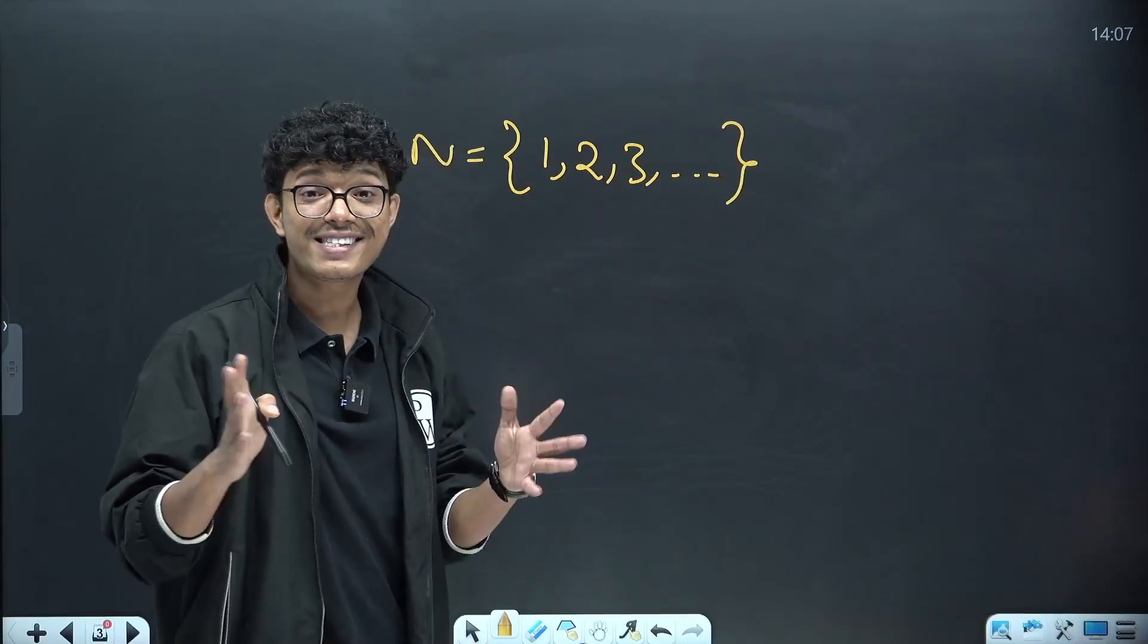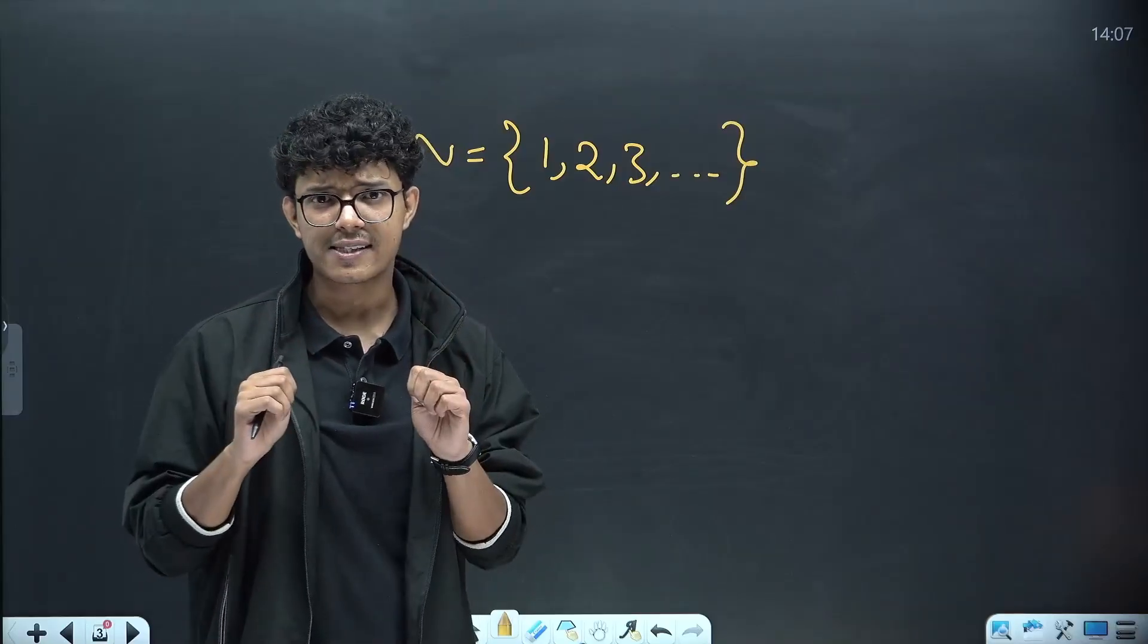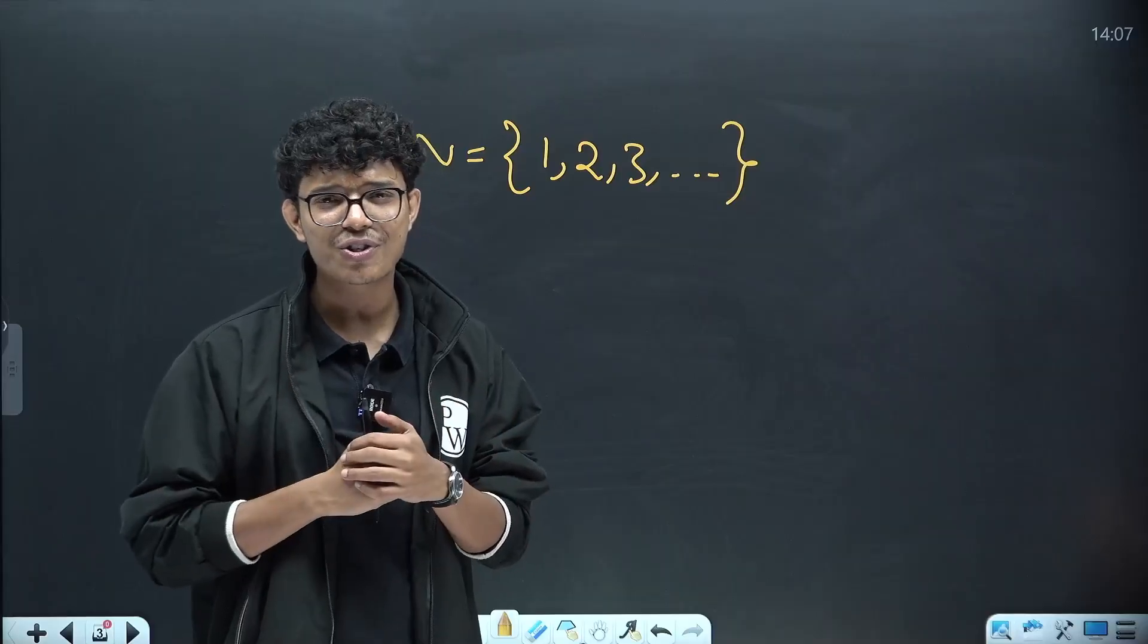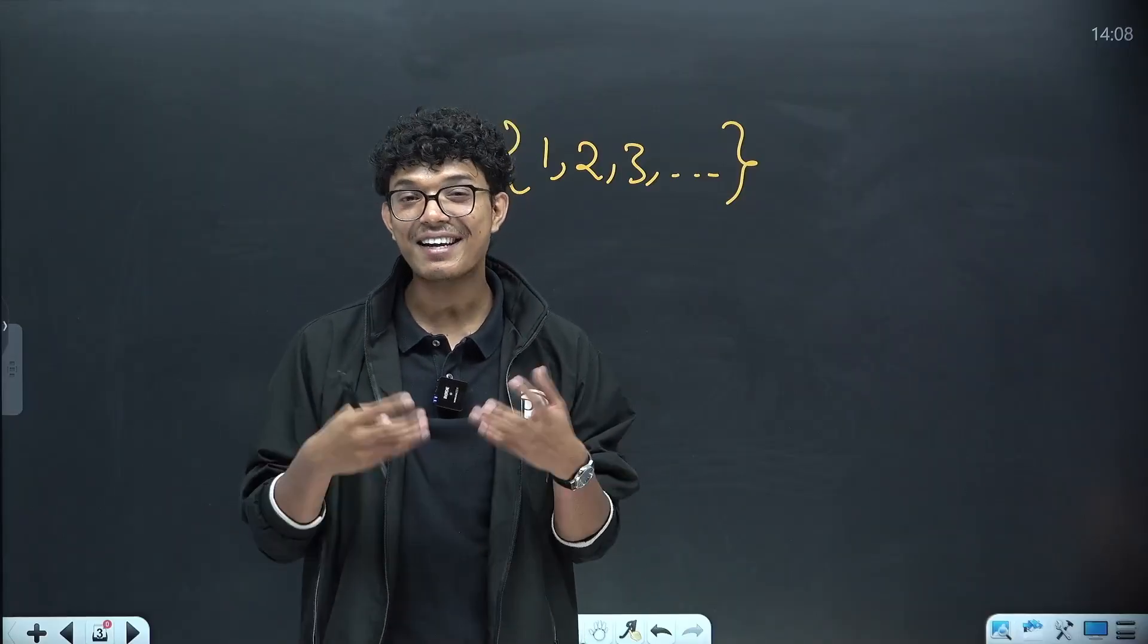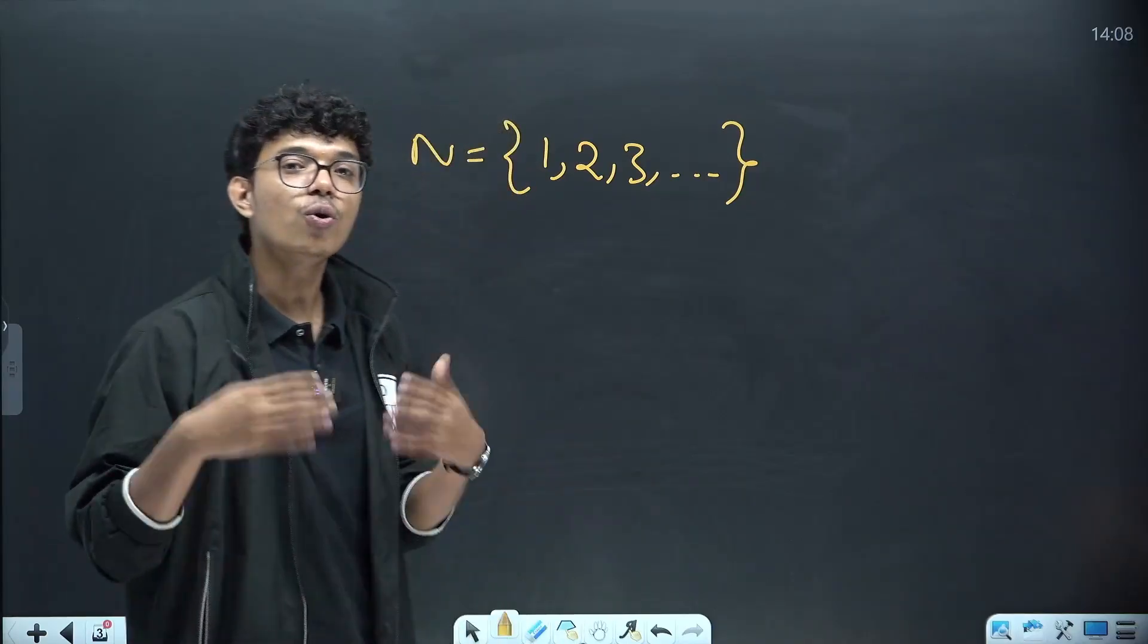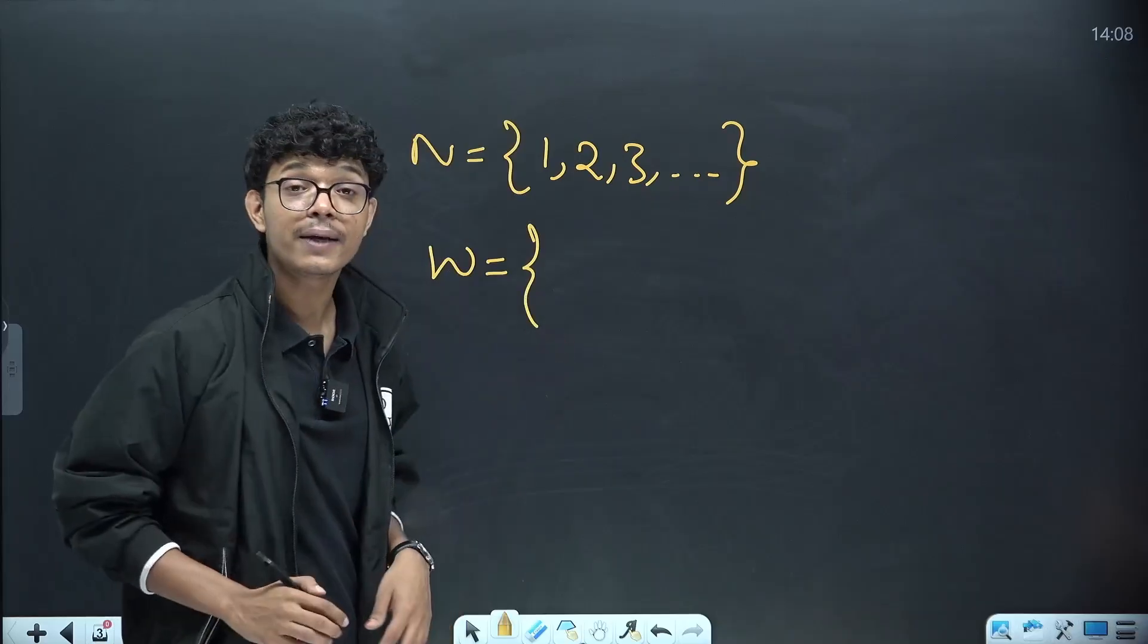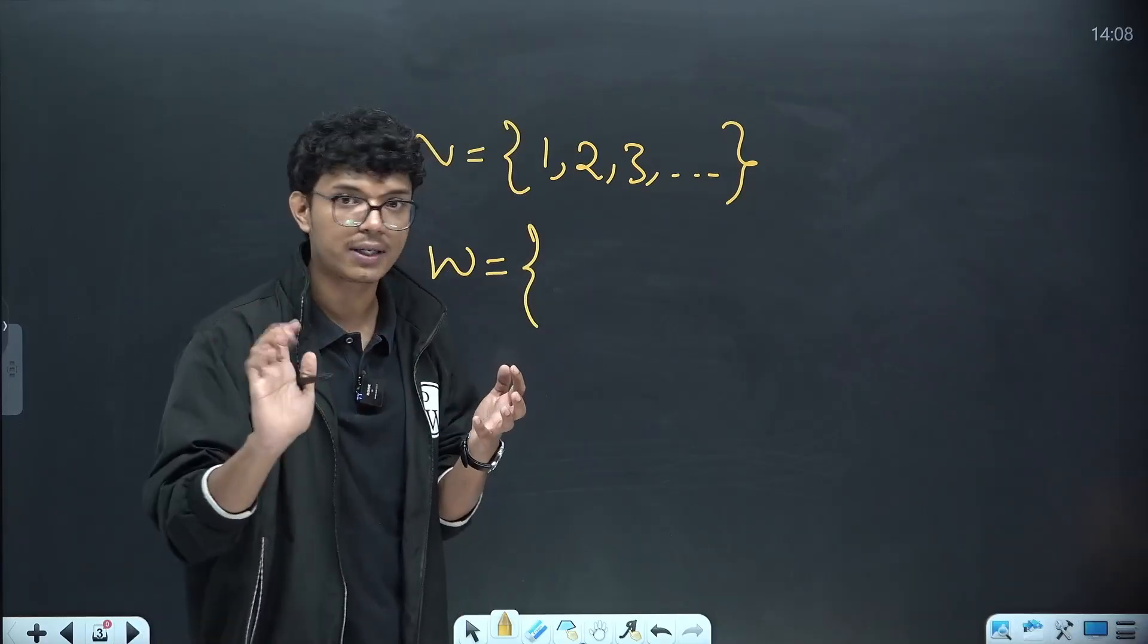Now let's say that your charms are having 4 chocolates and since I am feeling hungry I took all of your 4 chocolates. What are you left with? Nothing, and how do we represent nothing in mathematics? Zero. So whole numbers bolte hai isko and whole numbers me kya hote hai? The combination of 0 and all the natural numbers.